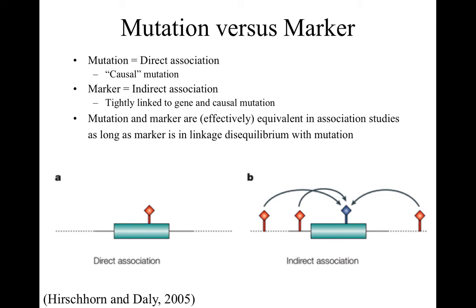First, I want to clarify the distinction between a potentially causal mutation in the candidate gene and a genetic marker such as a SNP marker that is tightly linked to the candidate gene. The former represents a direct association since the mutation is presumably causing the phenotype. The latter represents an indirect association where you have markers tightly linked to the candidate gene and the causal mutation. In an association test, whether there is direct or indirect association doesn't matter, as long as in the indirect case the marker is in linkage disequilibrium with the causal mutation.